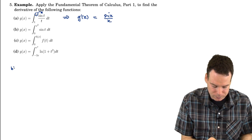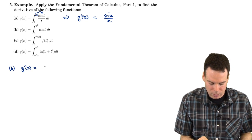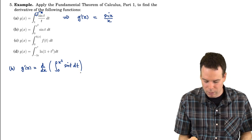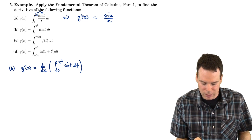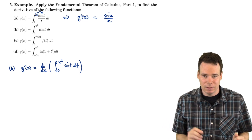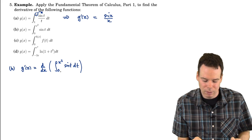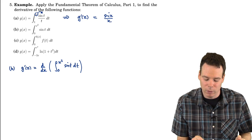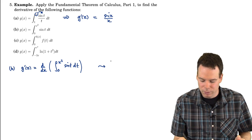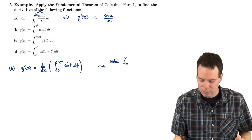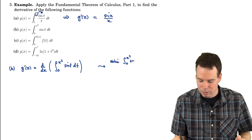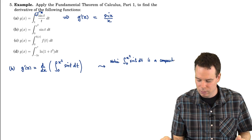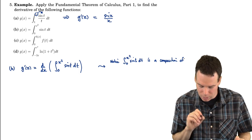Now let's look at the next example. G prime of x is the derivative of the integral from 0 to x² of sine(t) dt. We can't just pop x² into sine(t) and be done, because this isn't in the form the Fundamental Theorem applies to — that requires the lower limit to be a constant and the upper limit to be x by itself, not x squared. Notice that this integral is a composition of two functions.